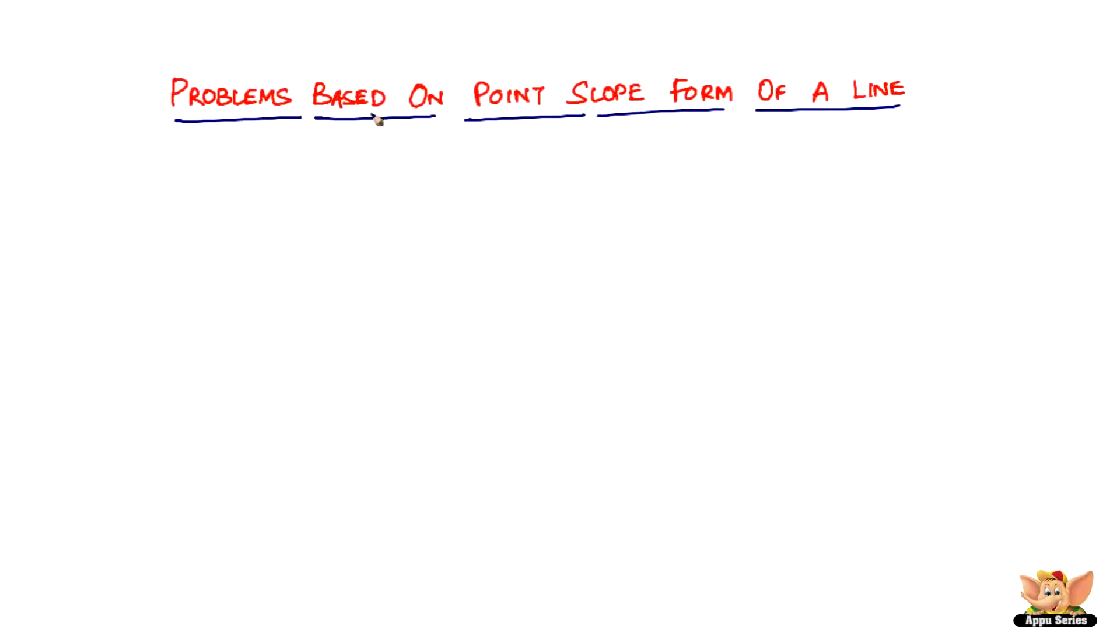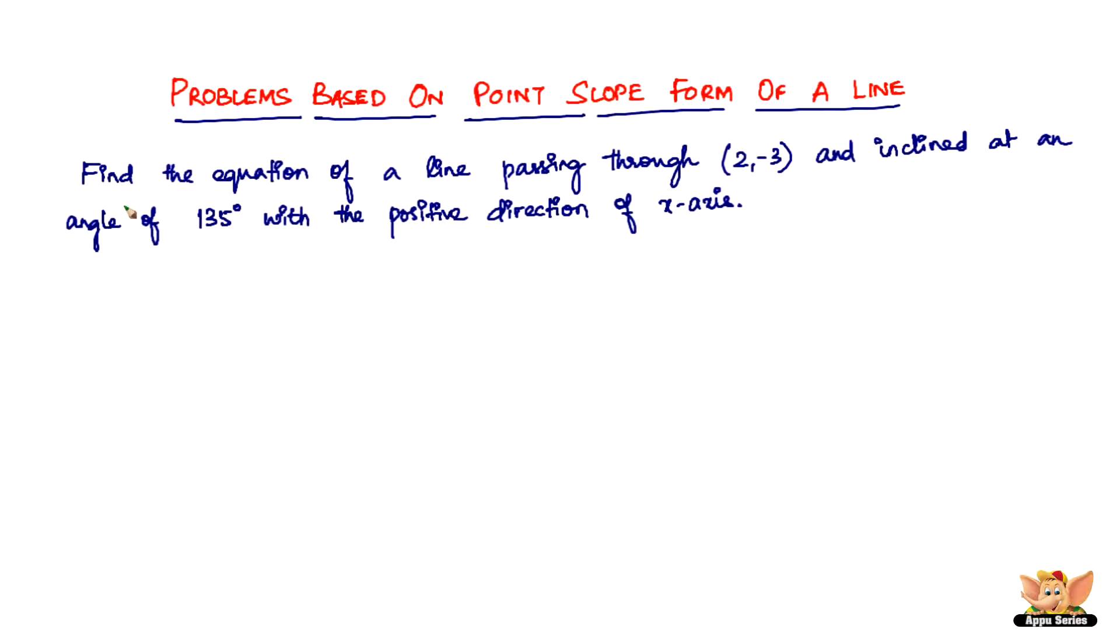In this video, let us solve problems based on point-slope form of a line. The question reads: find the equation of a line passing through (2, -3) and inclined at an angle of 135 degrees with the positive direction of the x-axis.